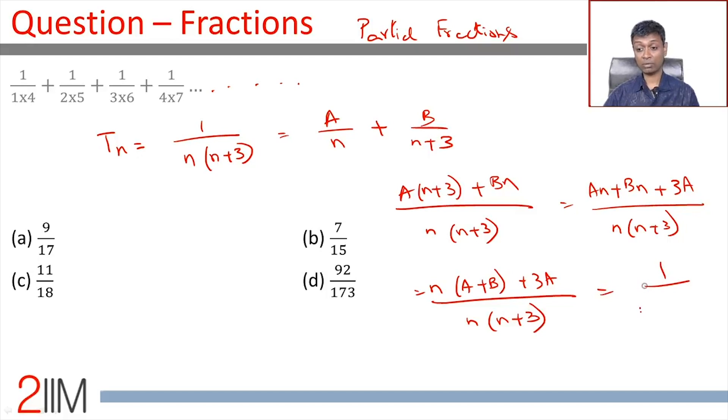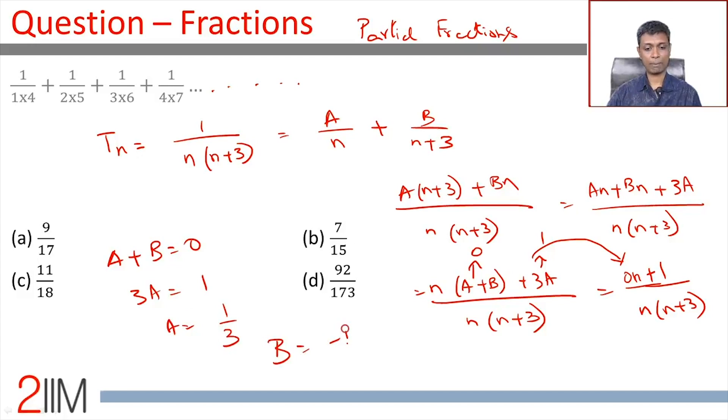This is given to be 1/(n(n+3)). If you notice, there is no n term here. This can be written as 0n + 1. If this has to match, it tells us A+B should be 0 and 3A should be 1. So A+B equals 0, 3A equals 1, or A is 1/3 and B is -1/3. Bingo! We're done.